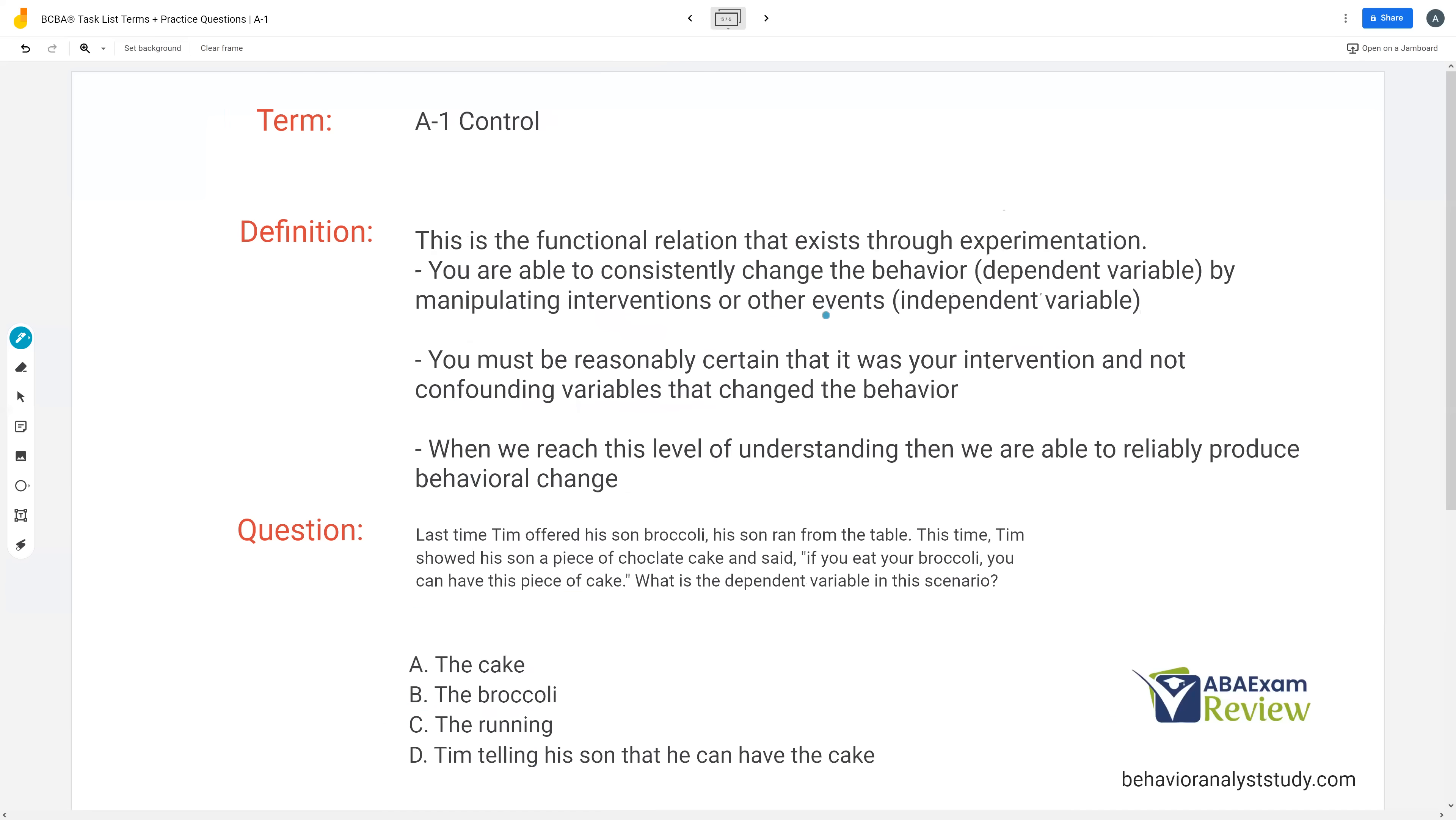Control is now we're saying is a functional relation that exists through experimentation. We're saying we're able to consistently change the behavior, our dependent variable, by manipulating interventions or other events. So we're actually going in there now and manipulating antecedents and consequences and looking at its effect on behavior.